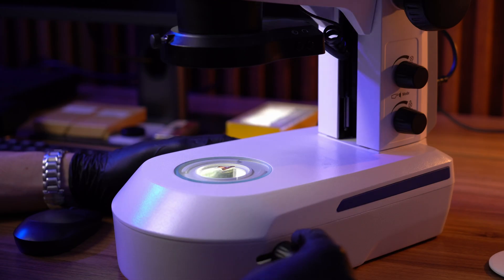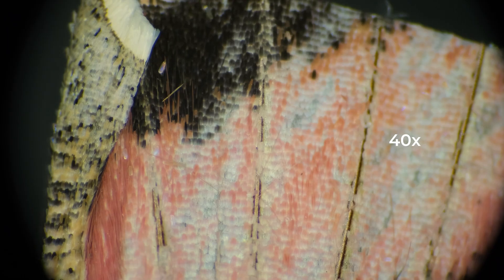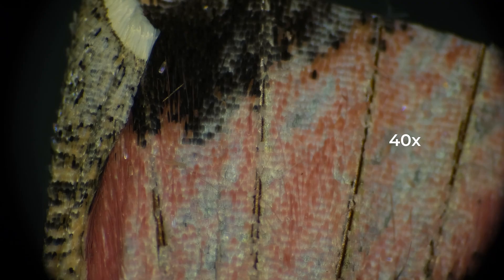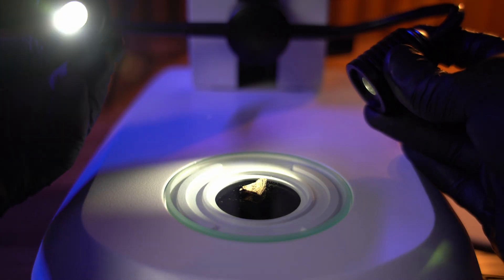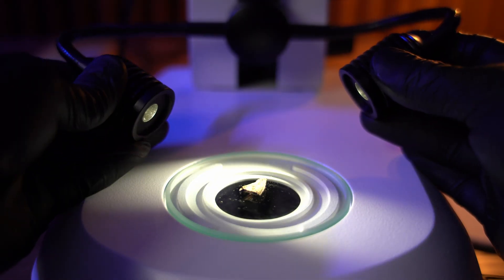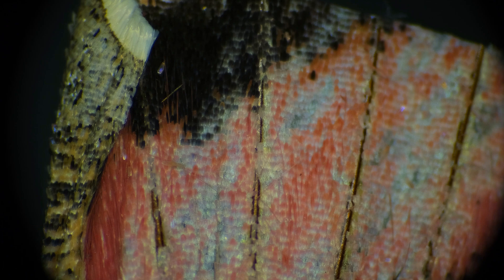Stereo microscopes don't zoom in super close. Usually just up to 50 times magnification. There are rare systems that go up to 200 times, but that's not common. The real advantage is that you get a wide field of view and a 3D look at your sample. You can also see colors clearly.